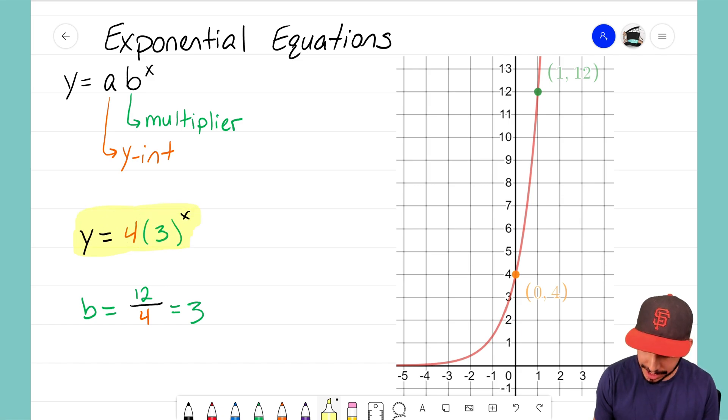And that's how you do this when given a graph. Determine your zero term or your y-intercept and determine your multiplier. It's that Math Magician, and I'll see you on the next video.